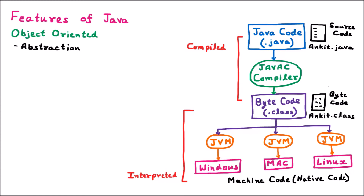The second feature is polymorphism. Polymorphism means one thing in many forms — 'poly' means many, 'morph' means form. For example, we have a function called sum for A and B, and similarly a function sum for A, B, and C. The name is the same — sum — but it is used for multiple forms. That is called polymorphism.